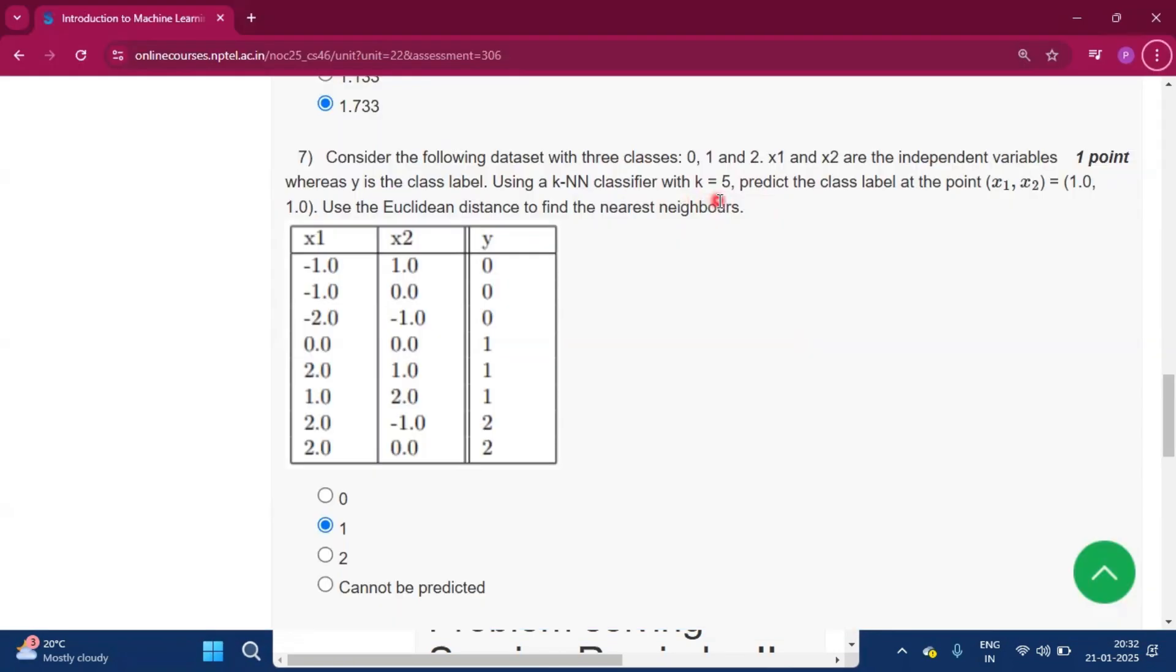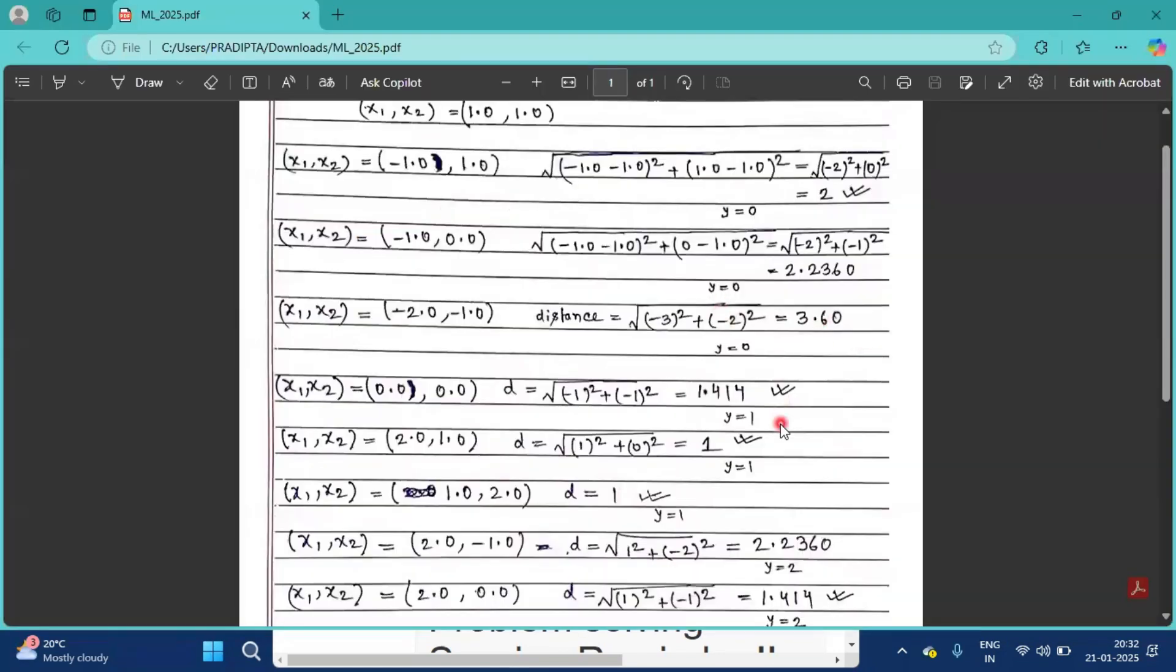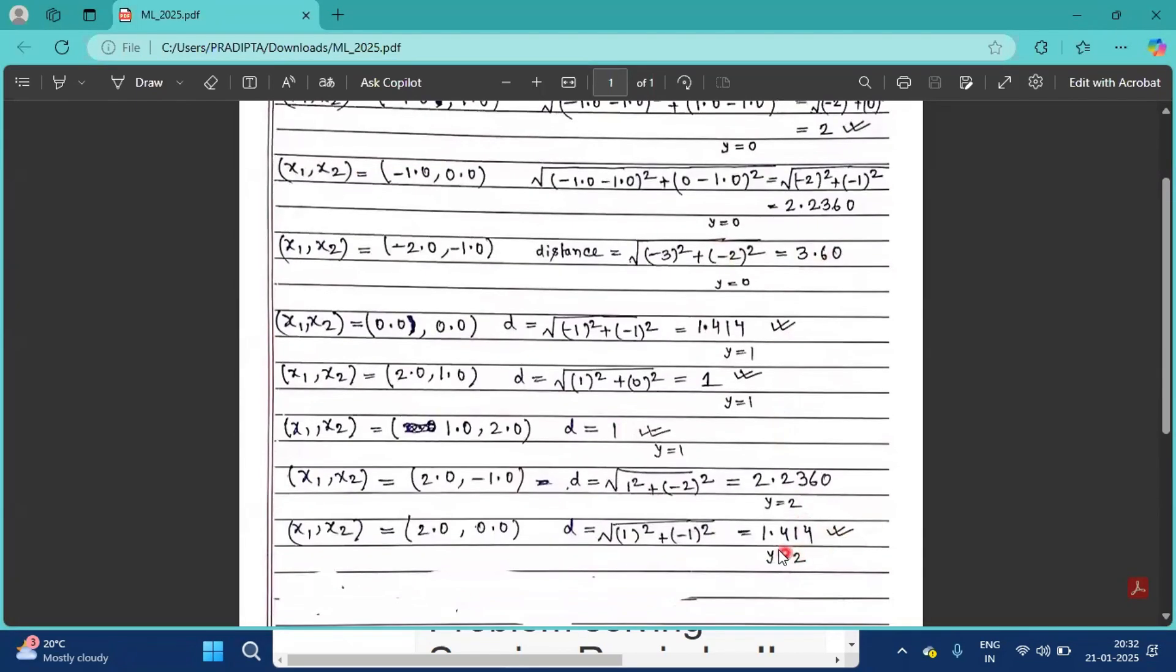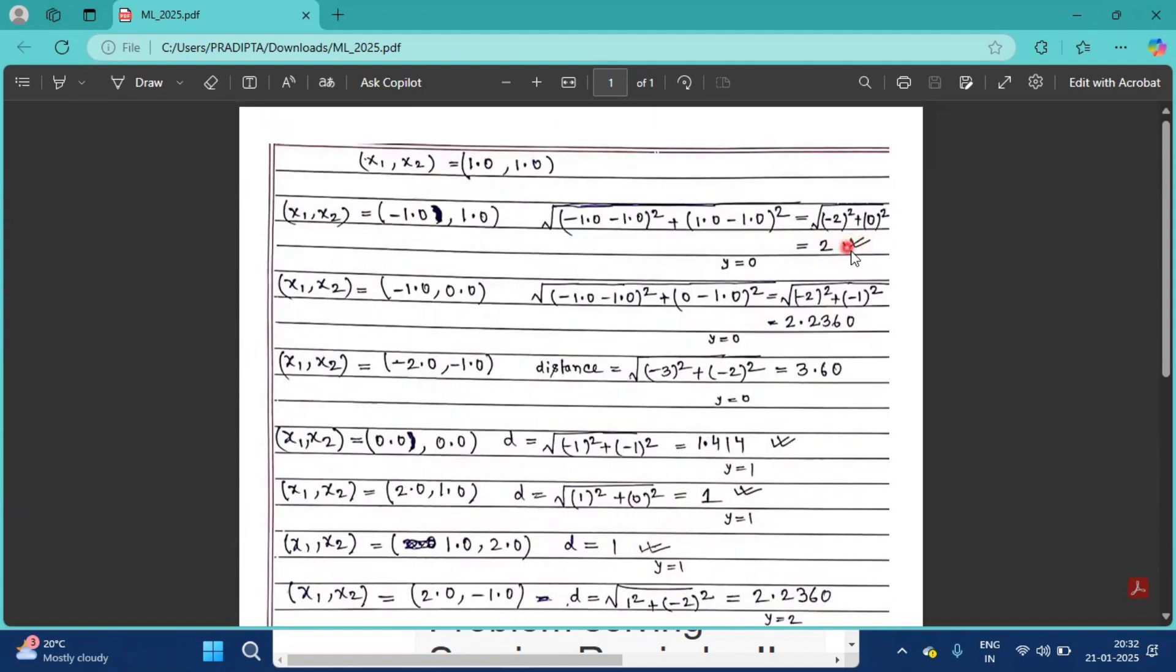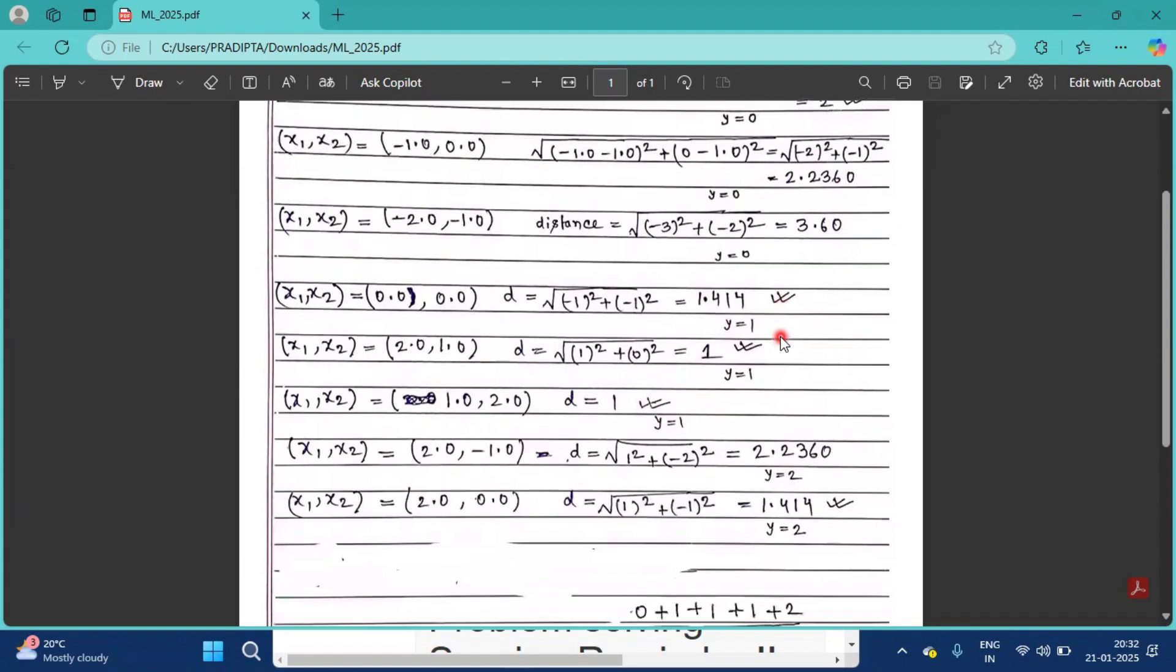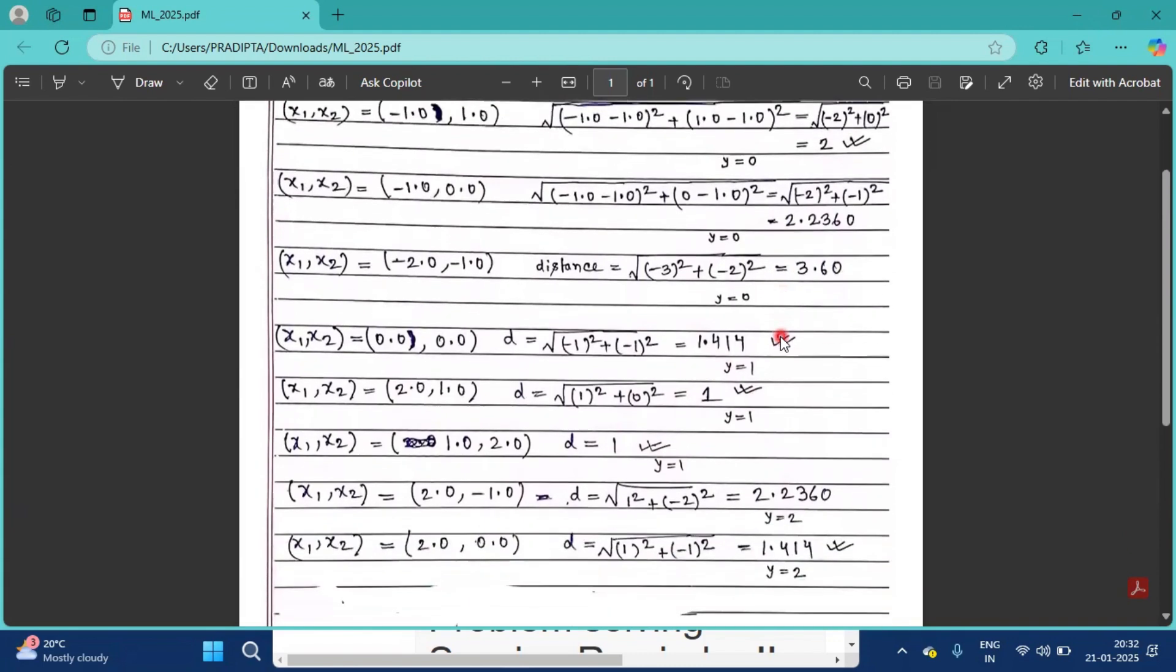This type of thing we will get, that means this distance we will find for all the data set. This question they given that k is equal to 5, so we have to find five nearest values. So this is one, that is 1.414, this is one. I pointed to this by double right, so these are the nearest value, nearest point.